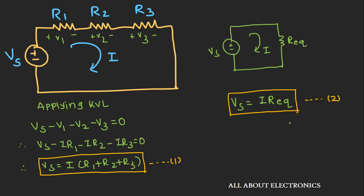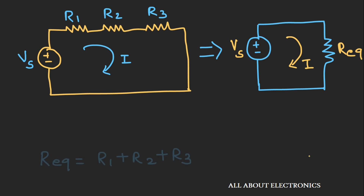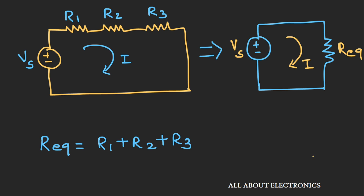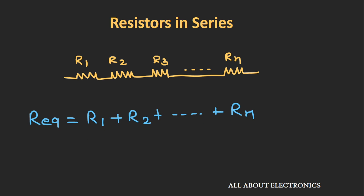Comparing equations 1 and 2, we can write I × R equivalent = I × (R1 + R2 + R3). That means R equivalent = R1 + R2 + R3. So we can say that if three resistors are connected in series, their equivalent resistance is the sum of all the resistors. In general terms, if N number of resistors are connected in series, their equivalent resistance is the summation of all N resistors.